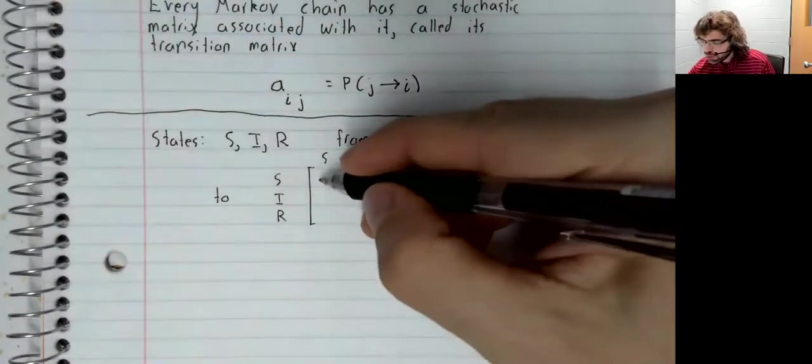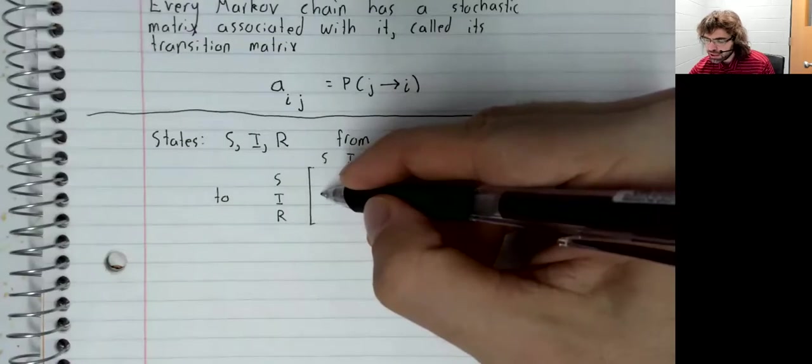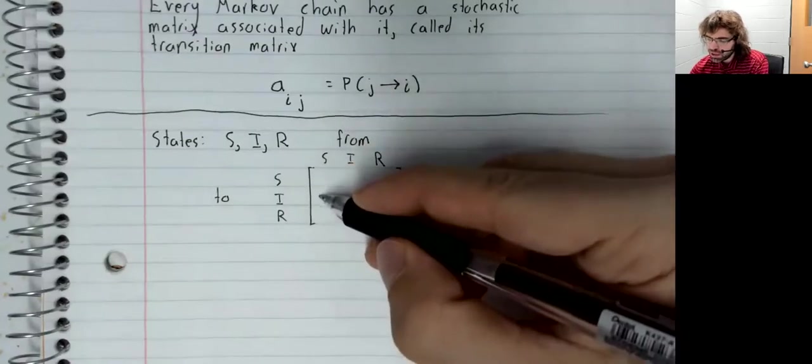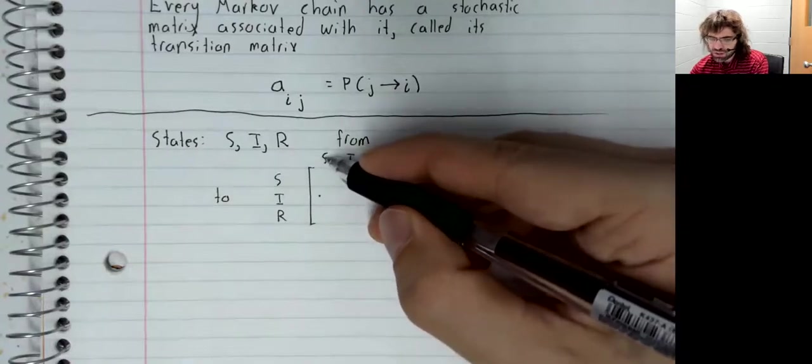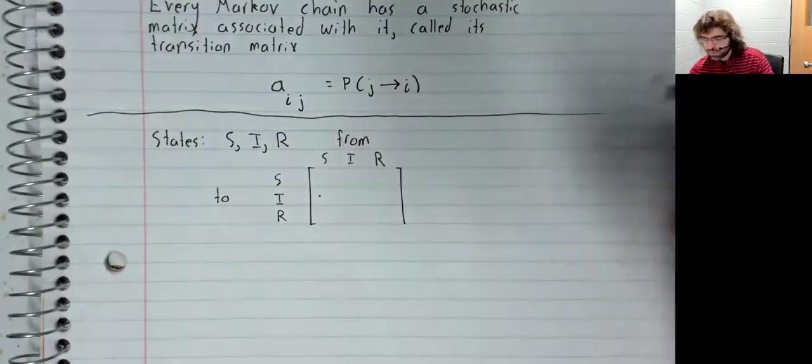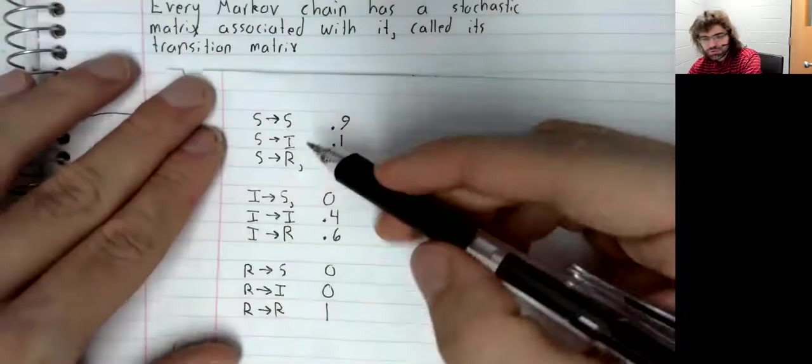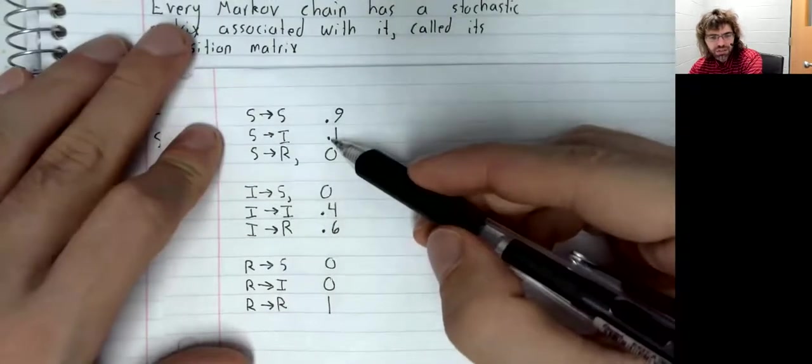For example, this entry here should be the probability of transitioning from S to I. And the probability of going from S to I is 0.1.